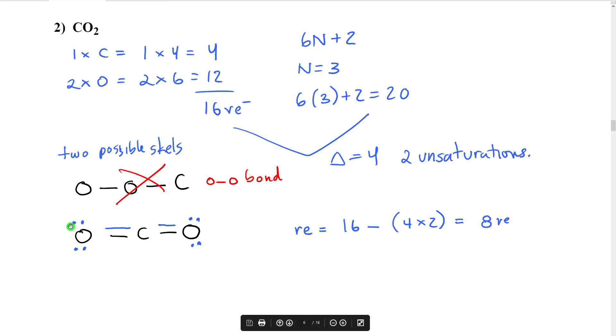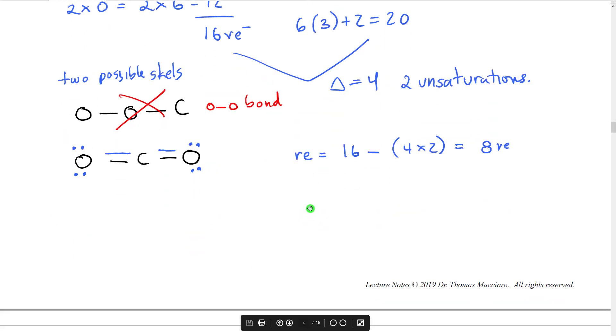So we start on one of the oxygens because it's most electronegative. We put one, two, three, four. Now that one is full. So we move to this one, five, six, seven, eight, and that should be our complete structure.